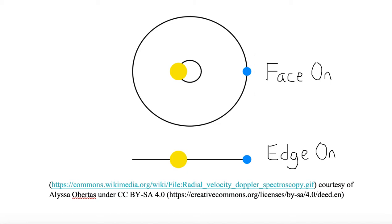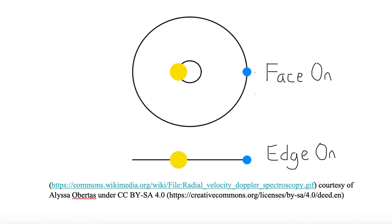Here we're looking at two orientations of a binary star system. We have a yellow star and a blue star. This one is face-on because we see both orbits of both stars.